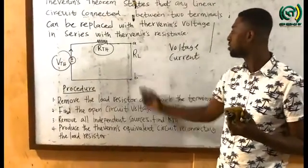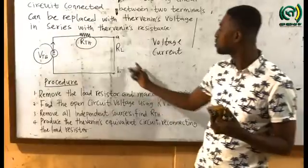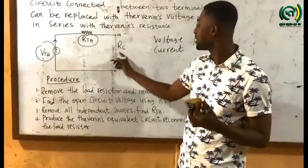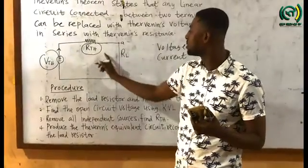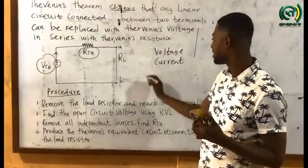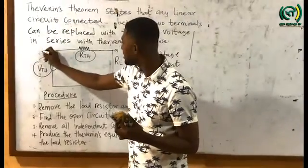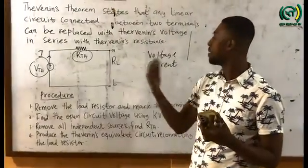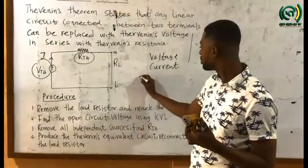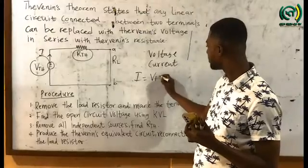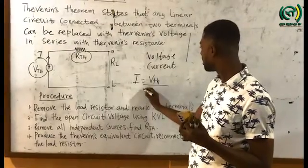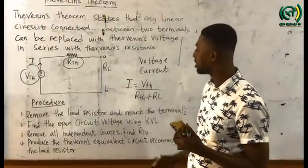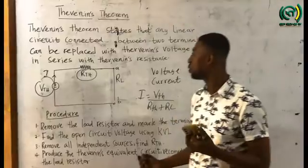RL is the load resistor. If I want to calculate the current through this simple circuit, since the load resistor RL is connected in series with the Thevenin's equivalent resistance RTH, the current I flowing through RTH will be the same current flowing through RL. So I will be equal to VTH over RTH plus RL.